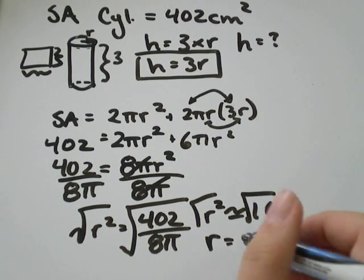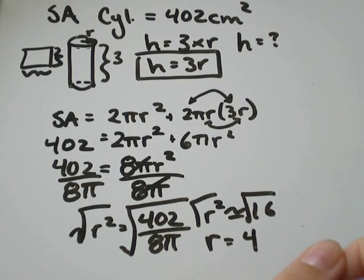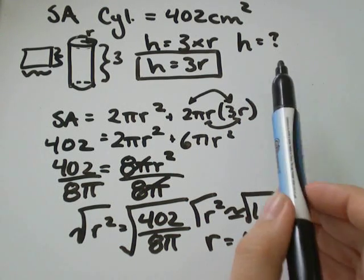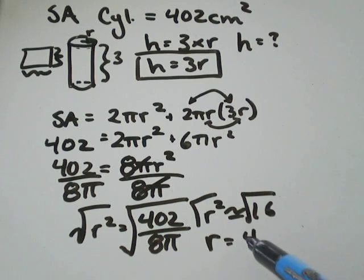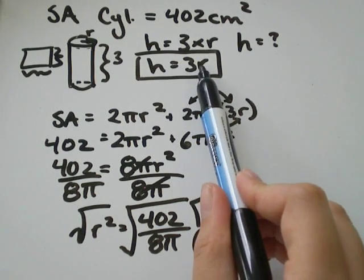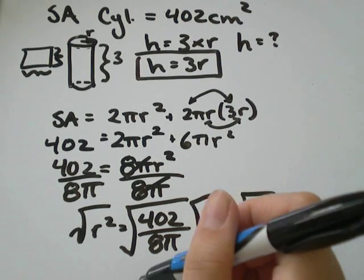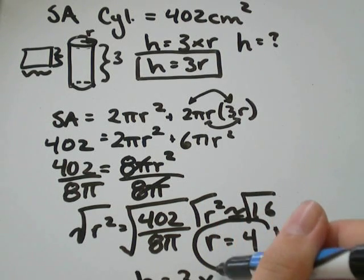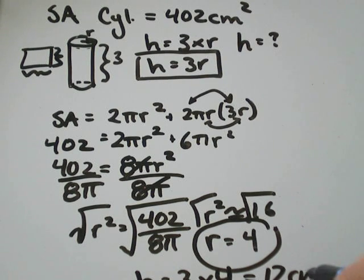Now if we think back to what the question asked us, we were asked for a height. We found radius. But we know that height is equal to 3 times the radius. If radius is 4, then height would be equal to 3 times 4. It would be equal to 12.